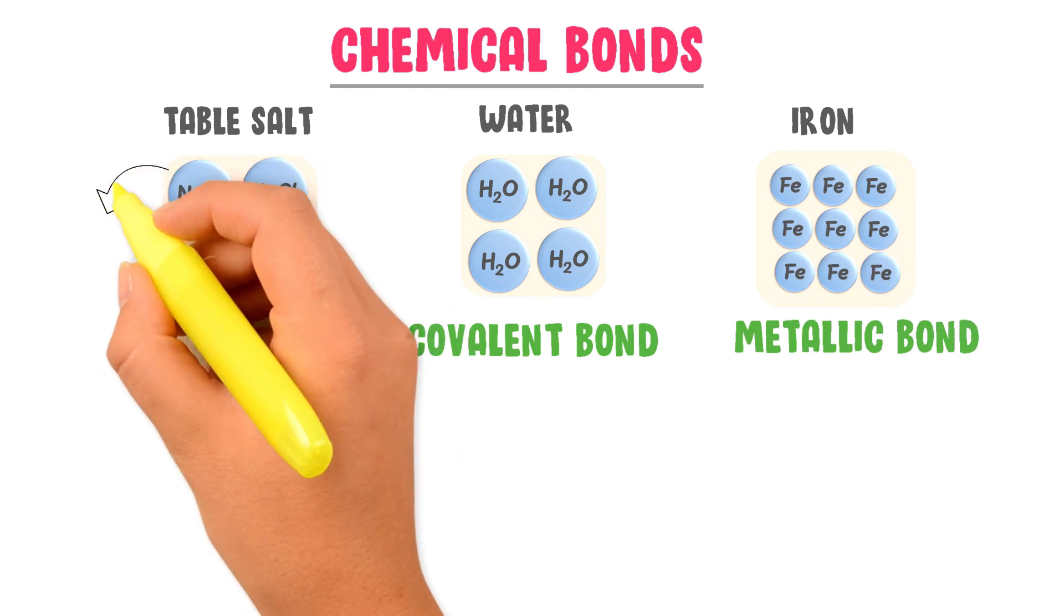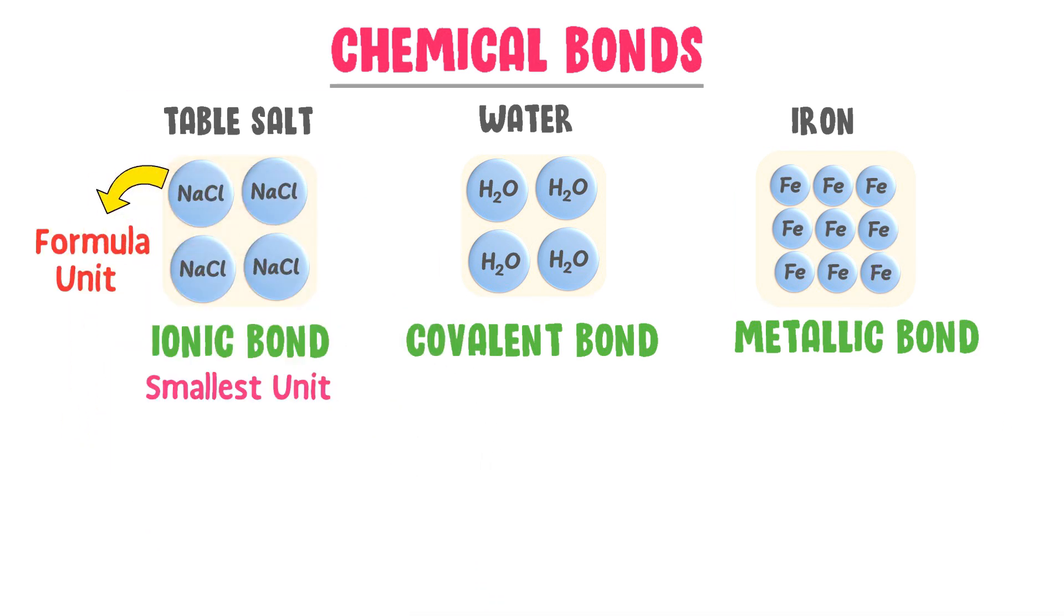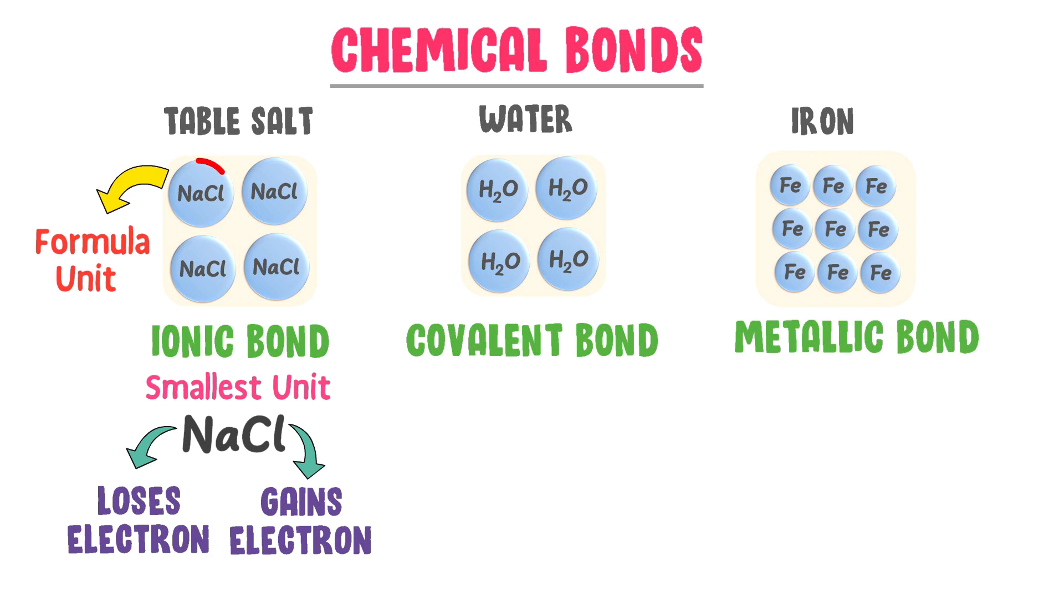The smallest unit of ionic compound is formula unit like NaCl. Ionic bond is formed when sodium loses one electron and chlorine gains one electron. As a result of this, a single formula unit of table salt is formed like NaCl.